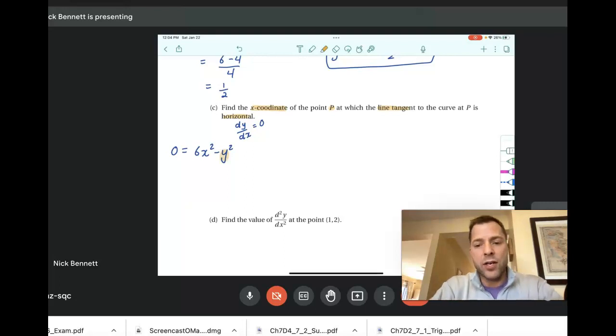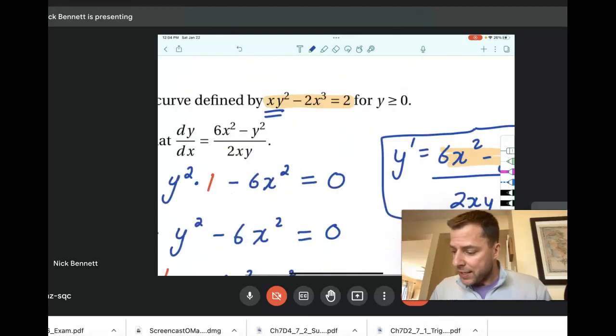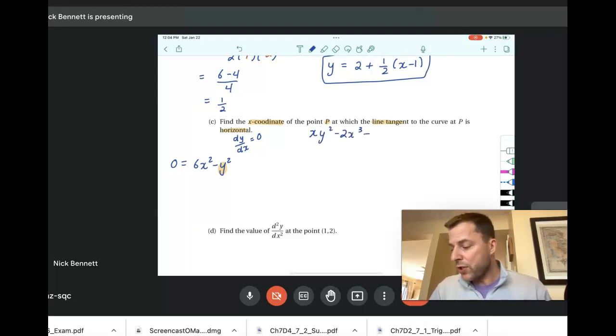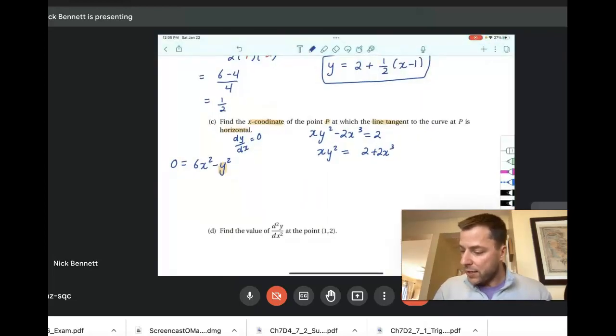But there's a problem here. There's too many unknown variables. So we're actually going to take our original equation, and if you look back up, you're going to see that there's a y² in there. So we're taking our original curve, and I'm going to put it here, xy² minus 2x³ equals 2. I'm going to solve that for y². So I'll have xy² equals 2 plus 2x³. And then I'm going to go ahead and divide each side by x. So I get y² is equal to 2 plus 2x³ over x.